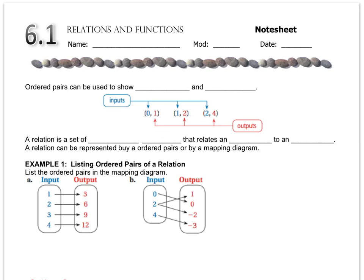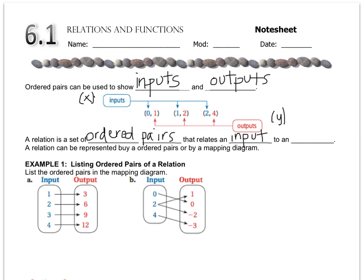Ordered pairs can be used to show inputs and outputs, and you see they have an example where the x-coordinate is functioning as the input and the outputs are being represented by the y values. A relation is a set of ordered pairs that relates an input to an output. A relation can be represented by ordered pairs or by a mapping diagram, and in example one they're demonstrating a mapping diagram.